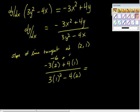And then get 3 times y is 1 squared minus 4x is 2. So we get this is negative 6, negative 6 plus 4 is equal to negative 2 over,